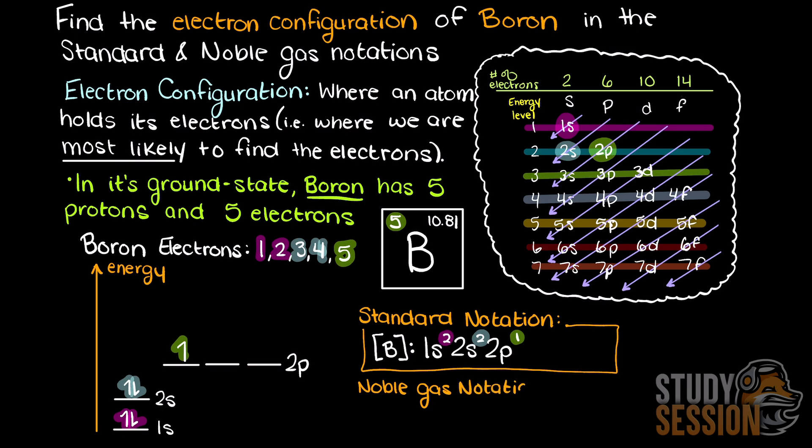To write this electron configuration in noble gas notation, we just go to our periodic table and find the noble gas closest to boron with less electrons. This is going to be helium, which has a 1s2 electron configuration. Therefore, we can just substitute our 1s2 with helium like so.